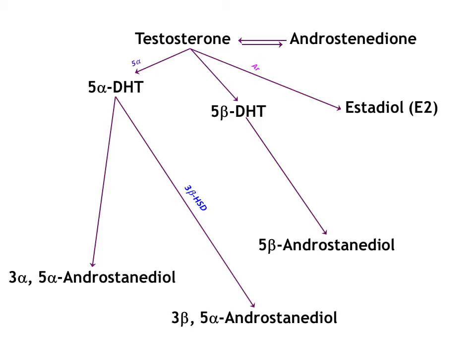The important thing to note here is that testosterone is converted to 5-alpha DHT via 5-alpha reductase. In order to produce 3-beta 5-alpha androstenediol, we need 5-alpha DHT. 5-alpha DHT is converted to 3-beta 5-alpha androstenediol via 3-beta HSD, as well as 17-beta HSD and 5-alpha reductase — all three of those enzymes appear to be required to produce 3-beta 5-alpha androstenediol.